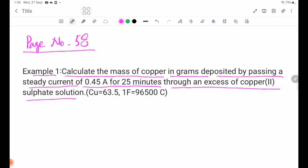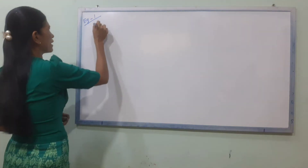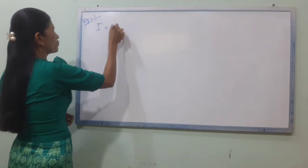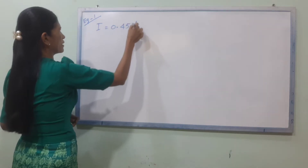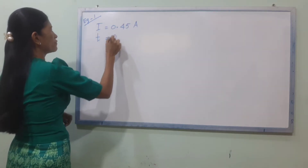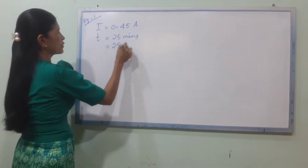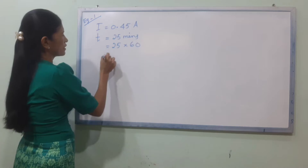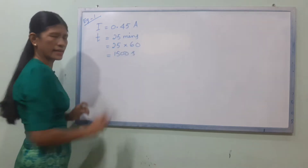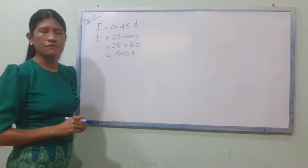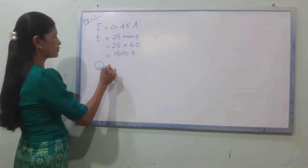Given: copper sulfate solution, current of 0.45 mA, time of 25 minutes. Converting time: 25 minutes into 60 equals 1500 seconds.